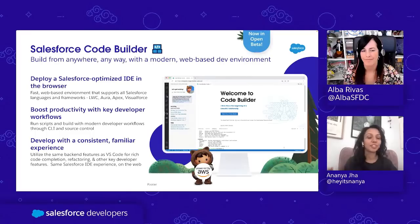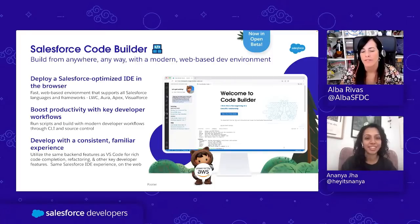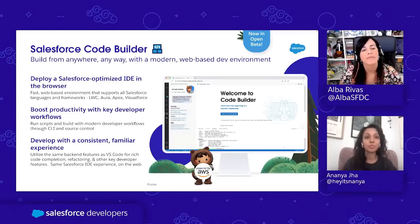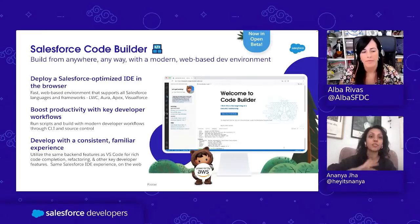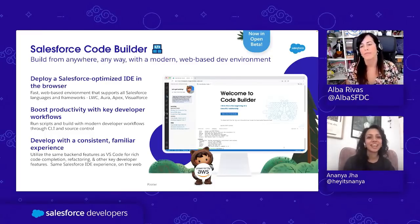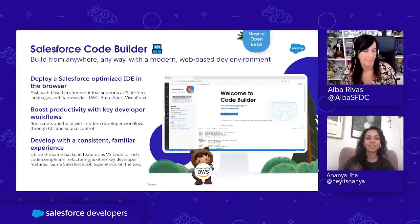Salesforce Code Builder is currently in open beta, so you are welcome to go out and test it. We are aiming to go GA around Winter '23. The main thing to understand about Code Builder is that it makes it easier to develop how you want and where you want — the Salesforce extensions and Salesforce CLI are pre-packaged for you. You just click one button from your org to launch directly into the Salesforce development environment, where you can work with LWC, Aura, and Apex with syntax highlighting, right inside your browser.